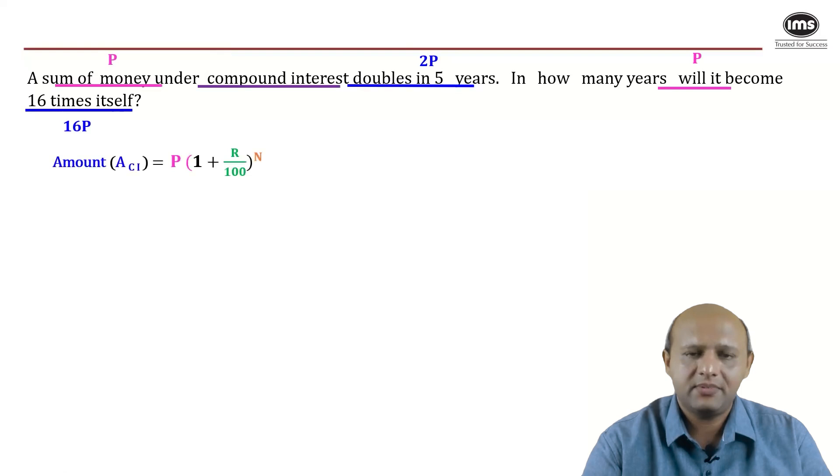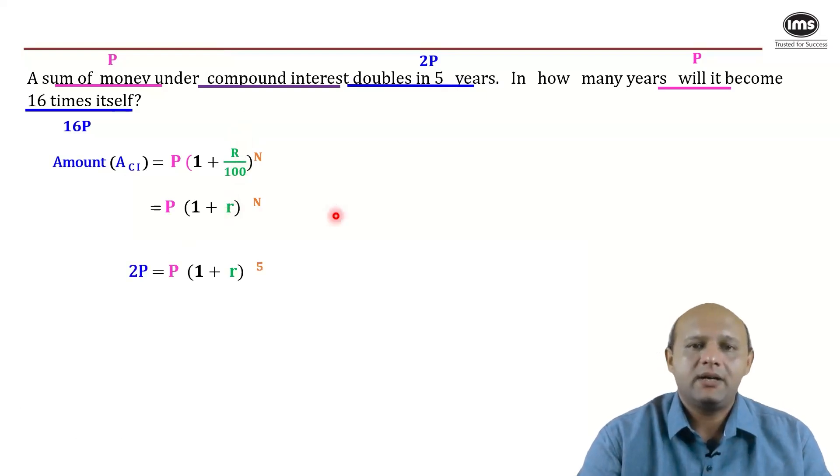Let us understand step by step how to approach the problem. Amount under compound interest we know is principal times (1 + r/100) raised to n. This in terms of percentage can be written as a fraction, so capital R by 100 can be written as small r, which represents the fraction.